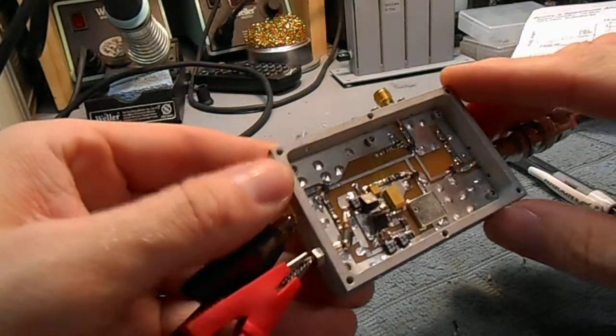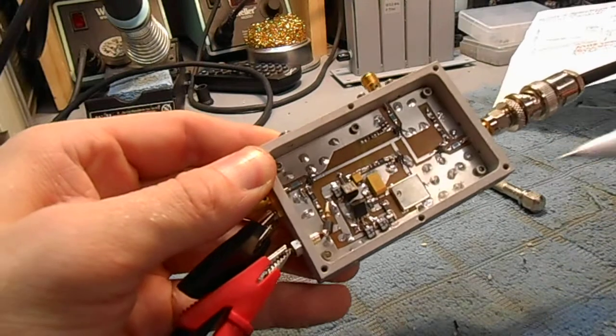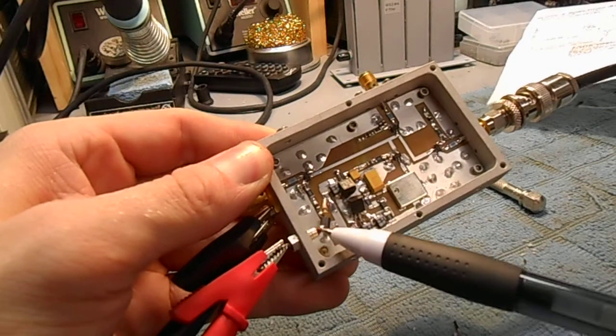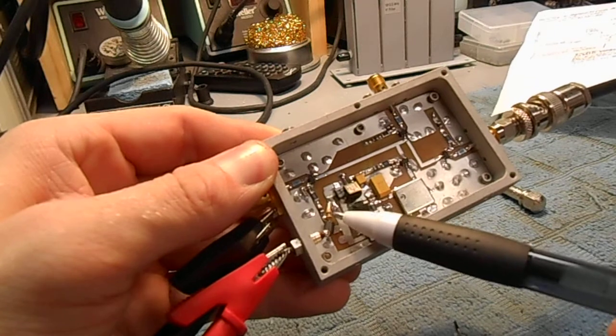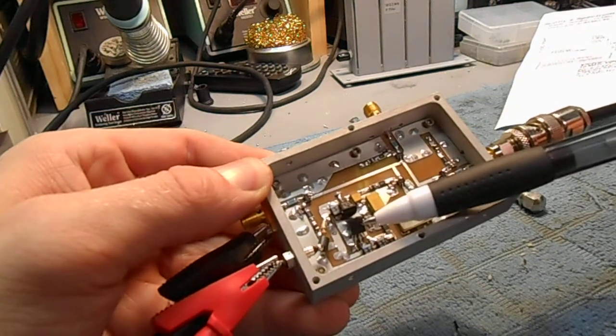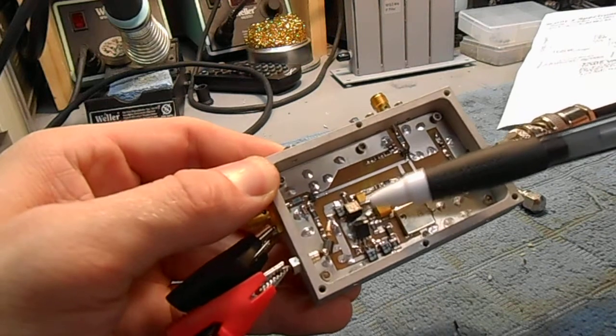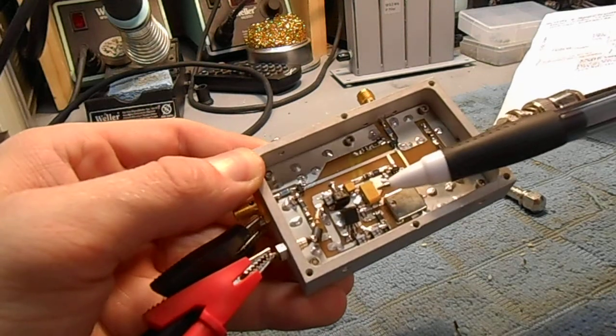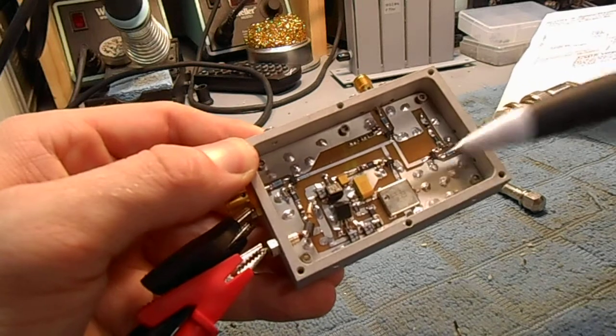This is what my version looks like. You can see DC input to a feed through cap. There's a ferrite bead, 10 ohm, eighth watt resistor. Here's the precision 5 volt regulator. There's a regular 5 volt regulator. You got a big 150 microfarad cap right next to the Vectron oscillator. Just kind of give a nice clean power supply.